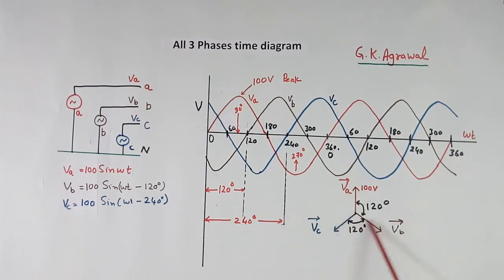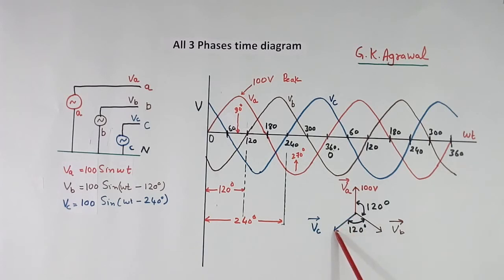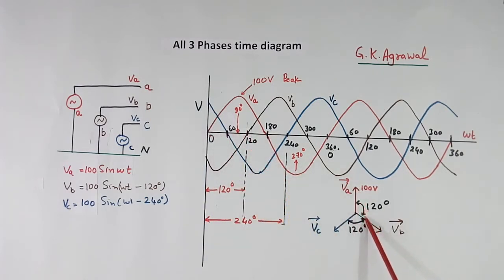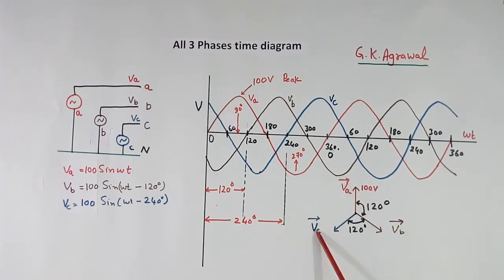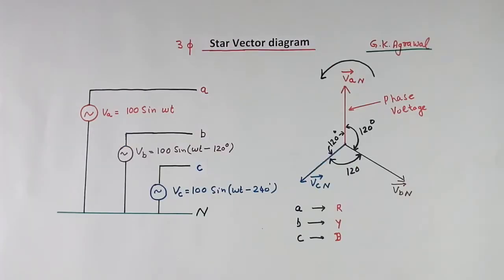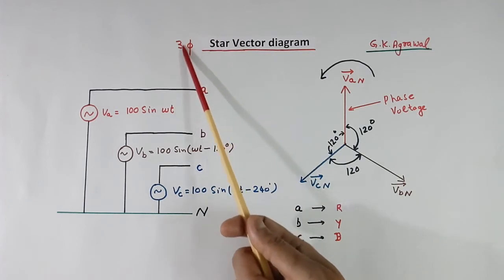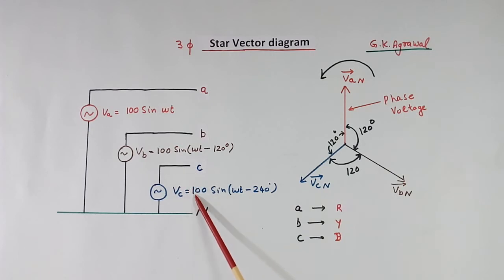Here I have shown the vector diagram of these 3 phases: VA, VB, VC. VB is lagging VA by 120 degrees, and VC is lagging VA by 240 degrees — so the three vectors are each 120 degrees apart. The vectors VA, VB, VC move in an anti-clockwise direction, like a clock needle moving in reverse. Here the star vector diagram is shown again, and this voltage across a phase is called the phase voltage, such as VAN between A and neutral.